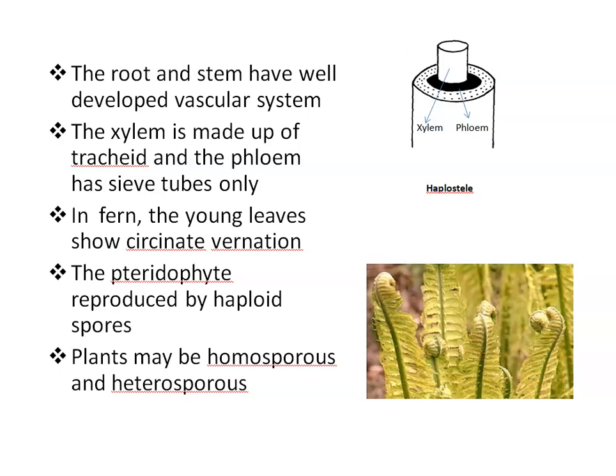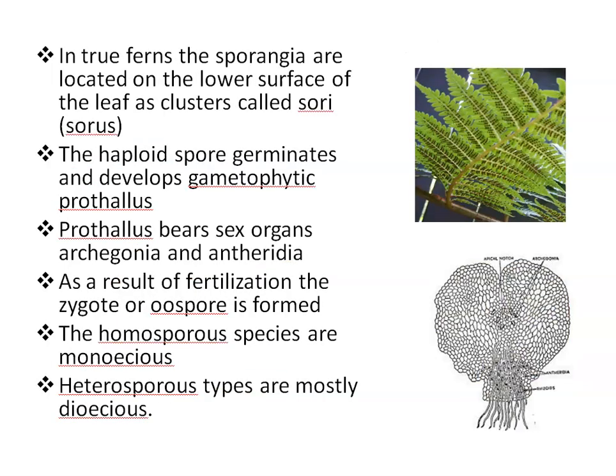Pteridophytes reproduce by haploid spores, which are produced within a specialized structure called sporangia. Plants may be homosporous, where all spores are same in shape and size, and heterosporous, when spores are of two different shapes and sizes — smaller called microspores and larger called megaspores. In some Pteridophytes, the sporangia develop on the stem, on the axis between leaf and stem, or on leaves, mostly on the ventral surface of the leaves.